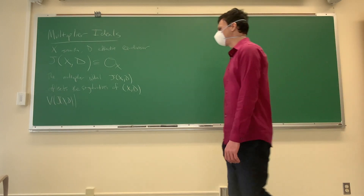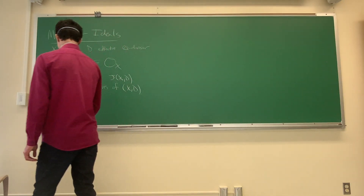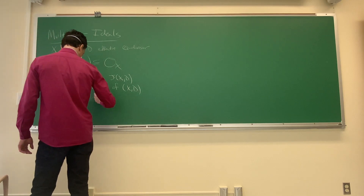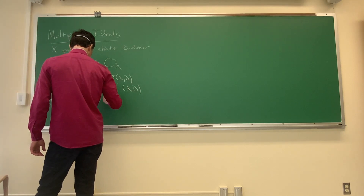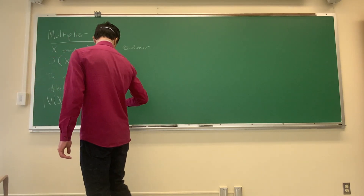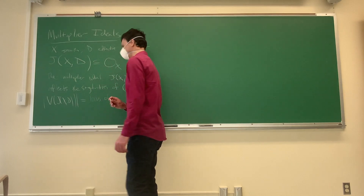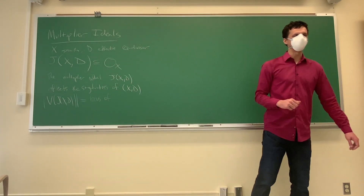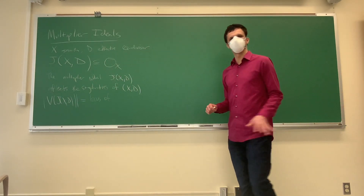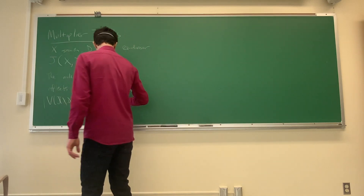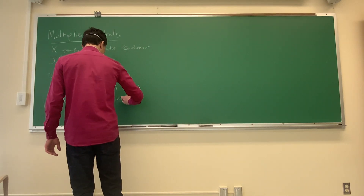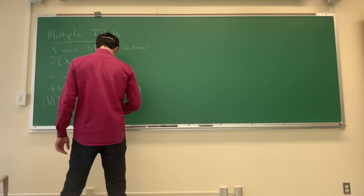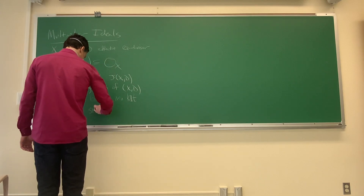That subscheme, as a set, is the locus of non-Kawamata log-terminal singularities. I prefer this terminology over 'log-canonical centers' because if the pair just barely has a non-trivial multiplier ideal, then you're log-canonical.